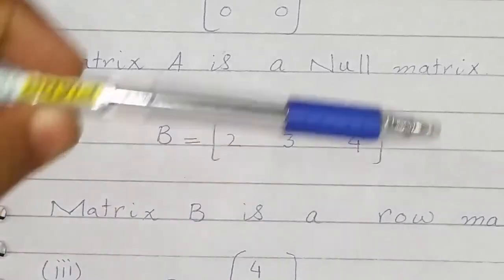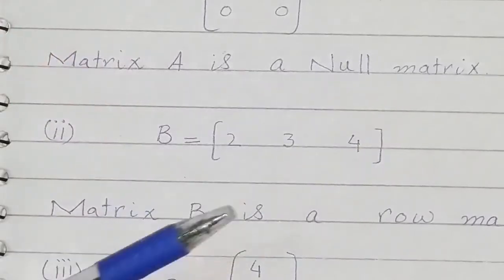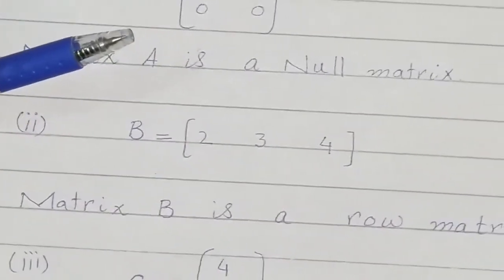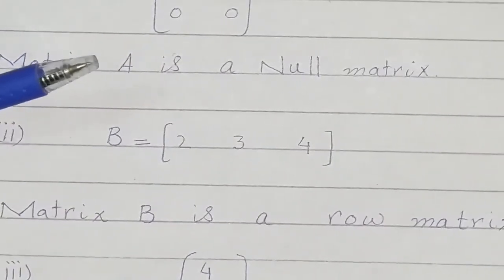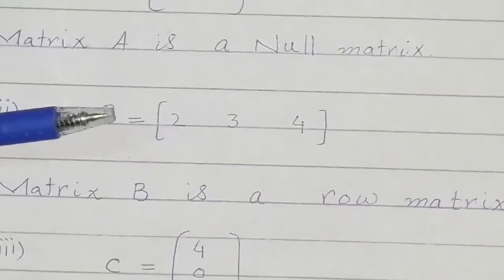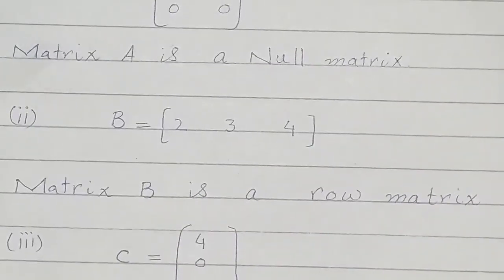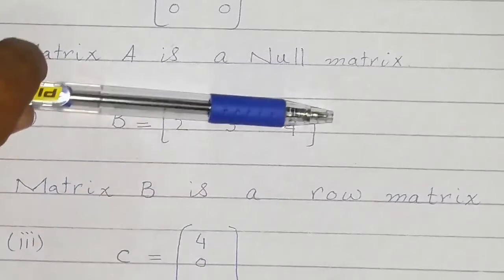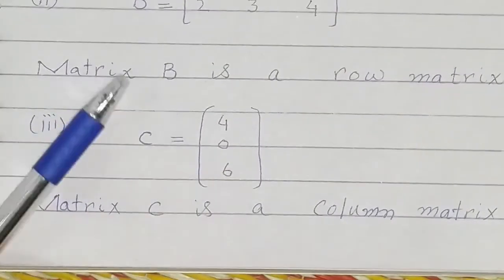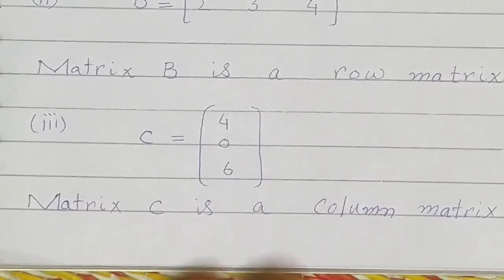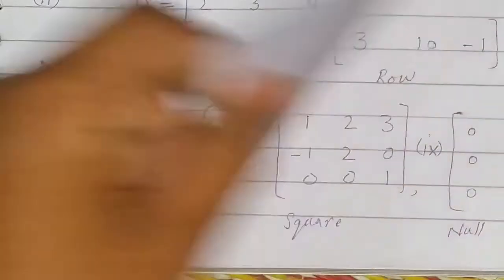Matrix B has only one row, so this matrix can be called a row matrix. Matrix C has only one column, so it can be called a column matrix.